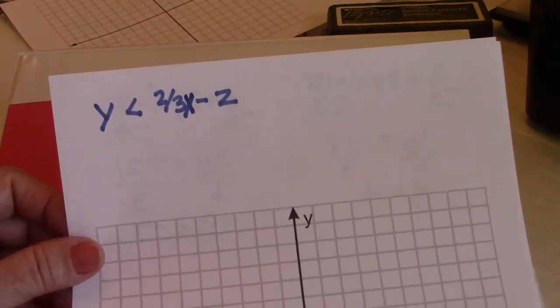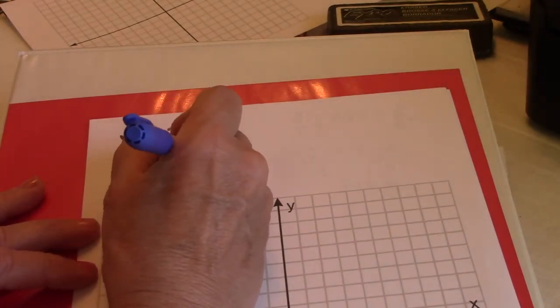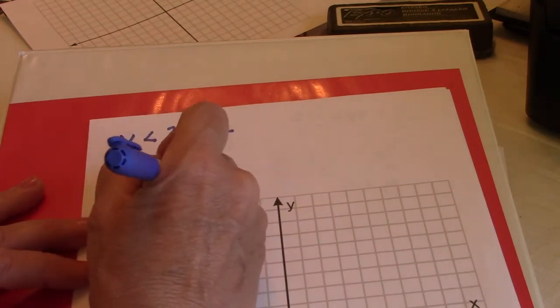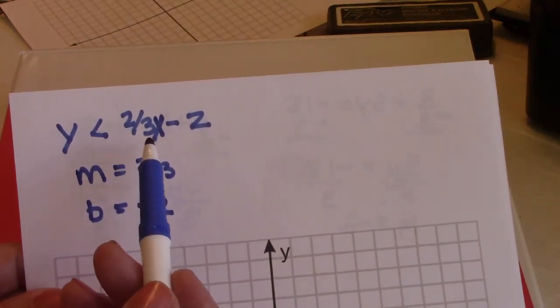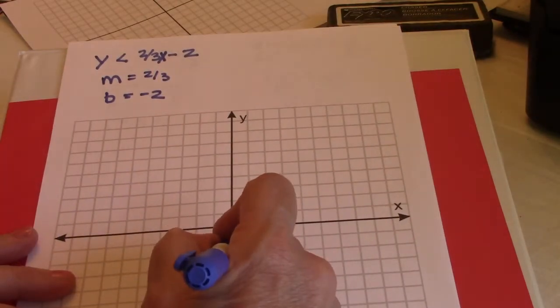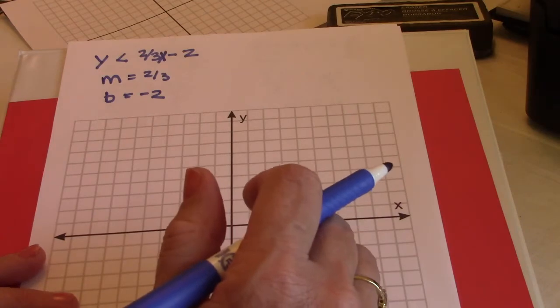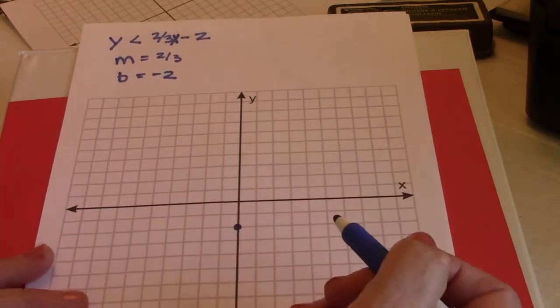Okay, so it's as simple as doing your m which is going to be 2 thirds and your b which is going to be a negative 2. My slope is 2 thirds, my b is a negative 2. Let's go down to 1, 2 on the y-axis because that's our y-intercept, or the place it crosses the y-axis.